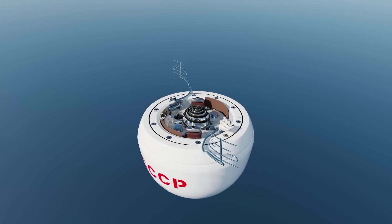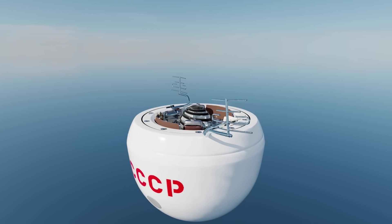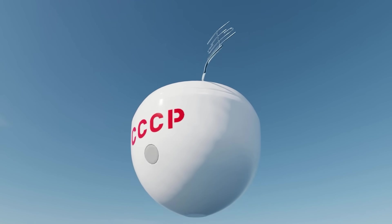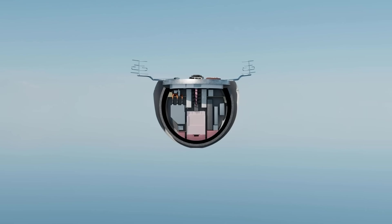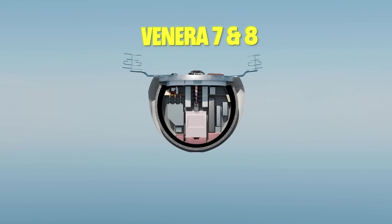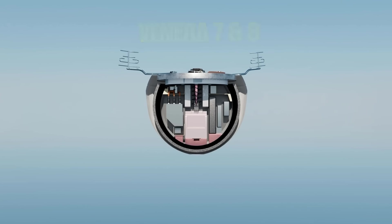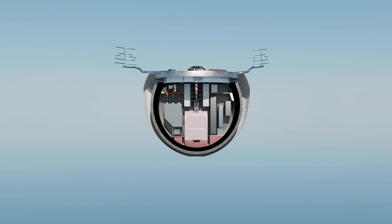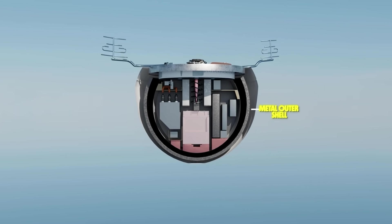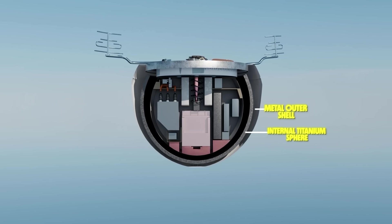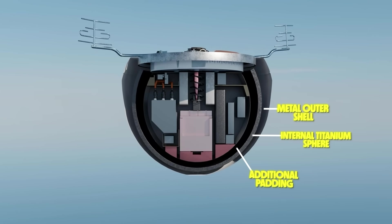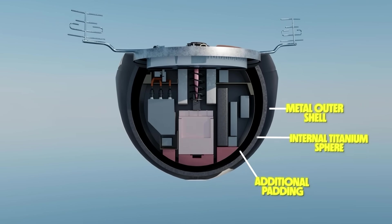And yet the Soviet Union was not discouraged in their efforts. They would simply build even bigger and even stronger probes, and they would try again. For their next round of Venera landing attempts number 7 and 8, the Soviets made two key modifications to the probe design. For one, the descent module was now built with a thicker outer shell of steel to resist the atmospheric pressure. And two, the inside of the probe was reinforced with an internal sphere of titanium to protect instruments from the heat and additional padding around the sphere to soften the blow from impact.